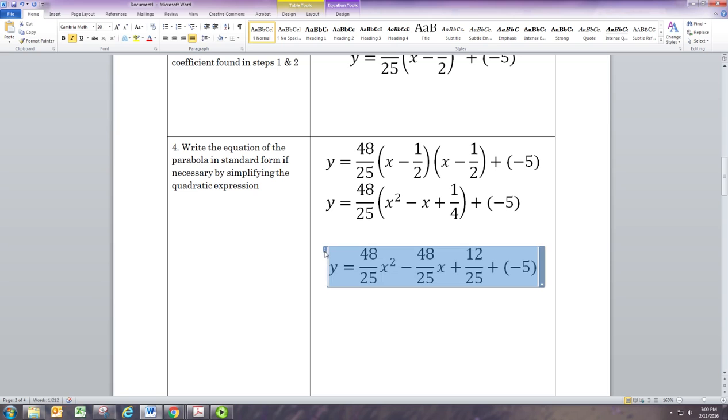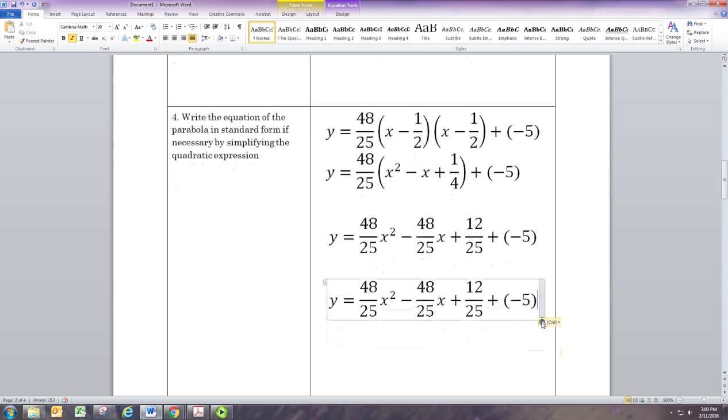Now to finish simplifying, we need to combine the constant terms: 12/25 and negative 5. Negative 5 would be negative 125/25. If you take negative 125 and add 12, you'll get negative 113/25. So now it's in standard form.